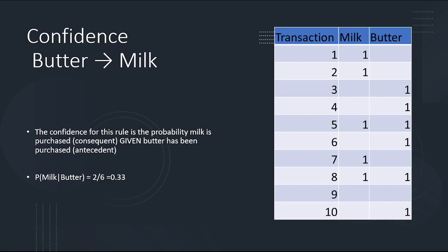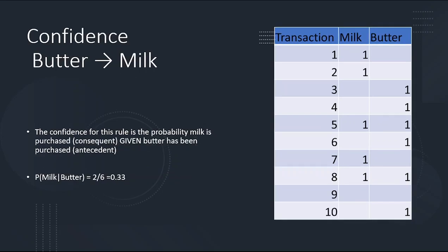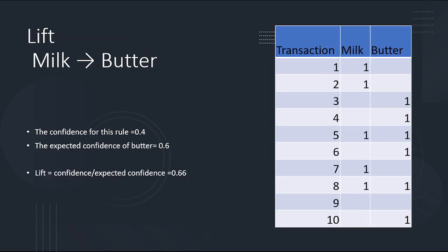The probability they buy butter given that they bought milk is 2 out of 5, because 5 transactions have milk and 2 of those also have butter. So that's 0.4. That's the reverse direction confidence.